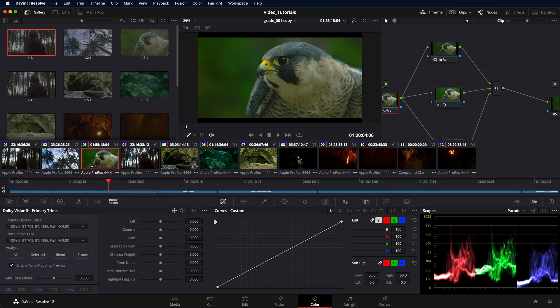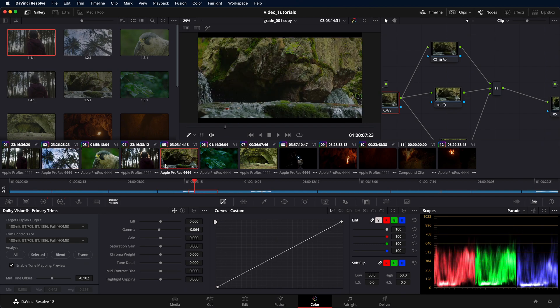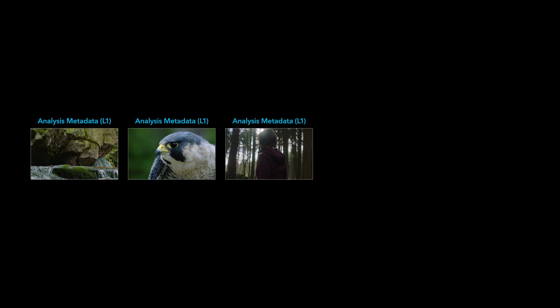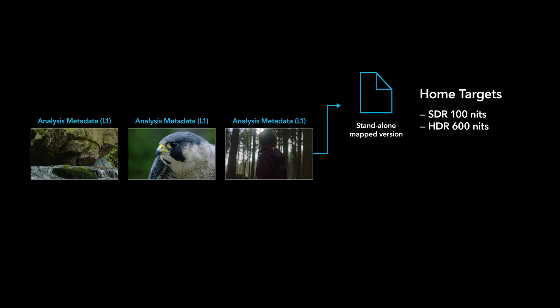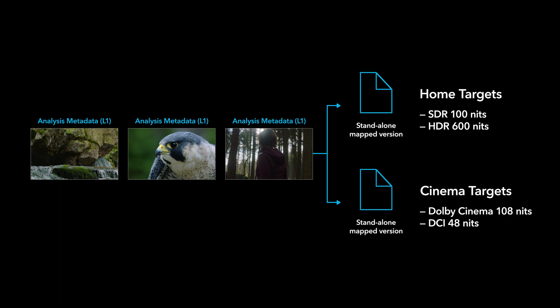Once you have finished the HDR master grade, you can run the Dolby Vision analysis to create L1 metadata. Using this L1 metadata, a mapped version can be generated and exported as a standalone file. This derived version can be mapped to any target, like SDR 100 nits or HDR 600 nits, as required by the client or for use as a reference by other departments like sound or graphics.